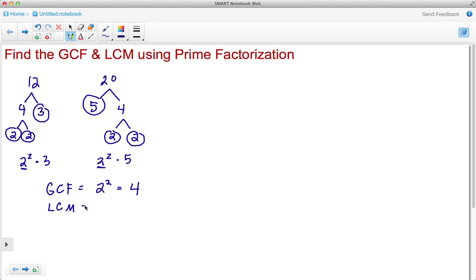With the LCM, we're looking for all the factors and we don't care if they're in common or not. Here we see that they have a factor of 2 that appears in both, a factor of 3 that appears in just one of them, and a factor of 5 that also appears in just one of them.